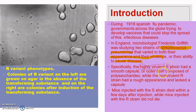The second strain, which is non-virulent or non-pathogenic, is called the R strain — R stands for rough. When grown on a nutrient agar medium, these bacteria produce rough colonies. They do not have a polysaccharide capsule, which is why the R strains are non-pathogenic and do not cause pneumonia.